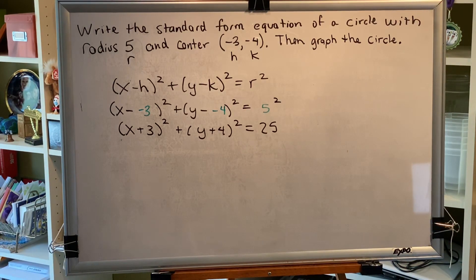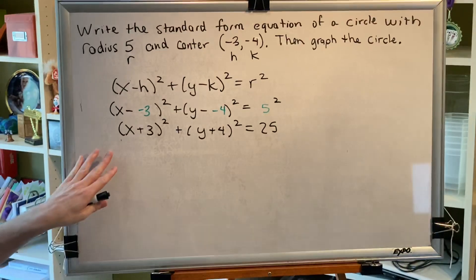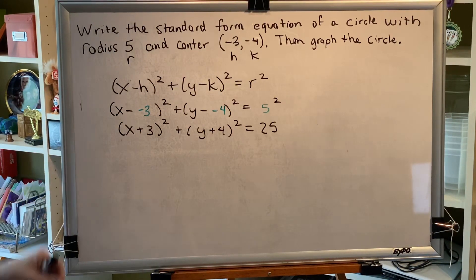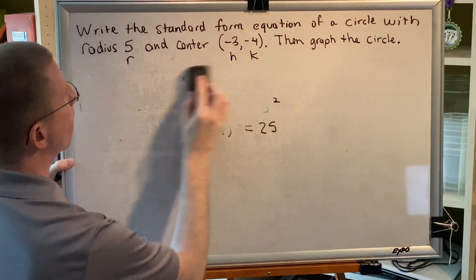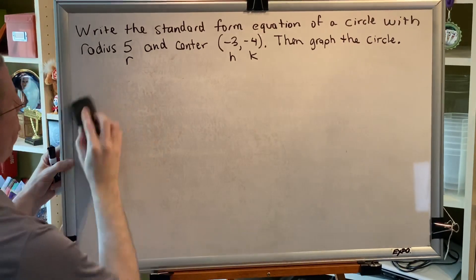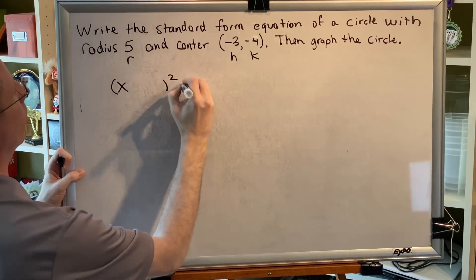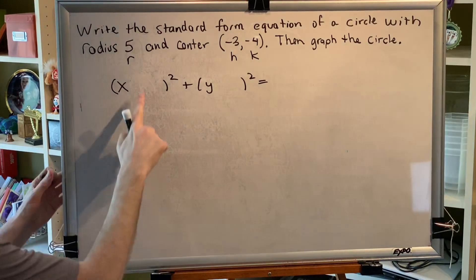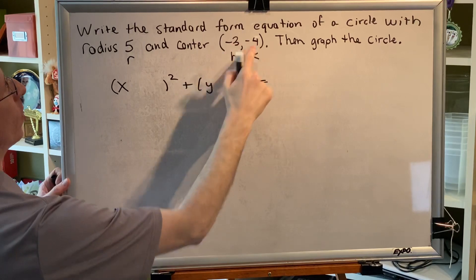Now before we move on to graphing the circle, there's something that I would like to show you. It's my hope that you will get so good at this skill that you'll be able to do all of this algebra in your head as a single action. Let me give you an idea of what I'm talking about. We know that the standard form has this structure. And we know that there's a number here and here. By the opposite rule, that number needs to be the opposite of the center provided.